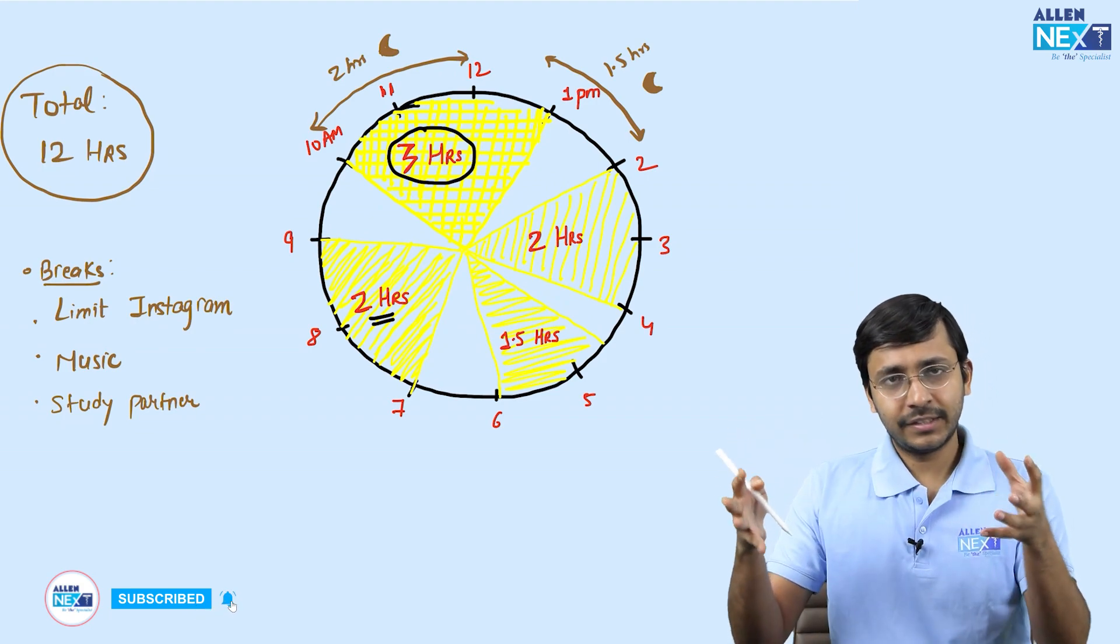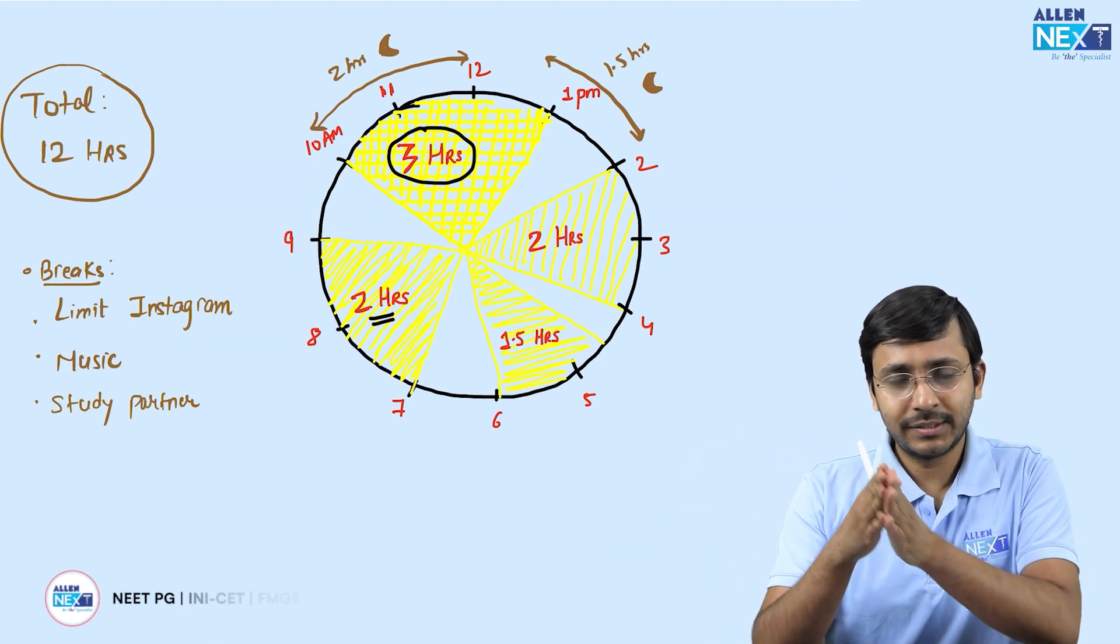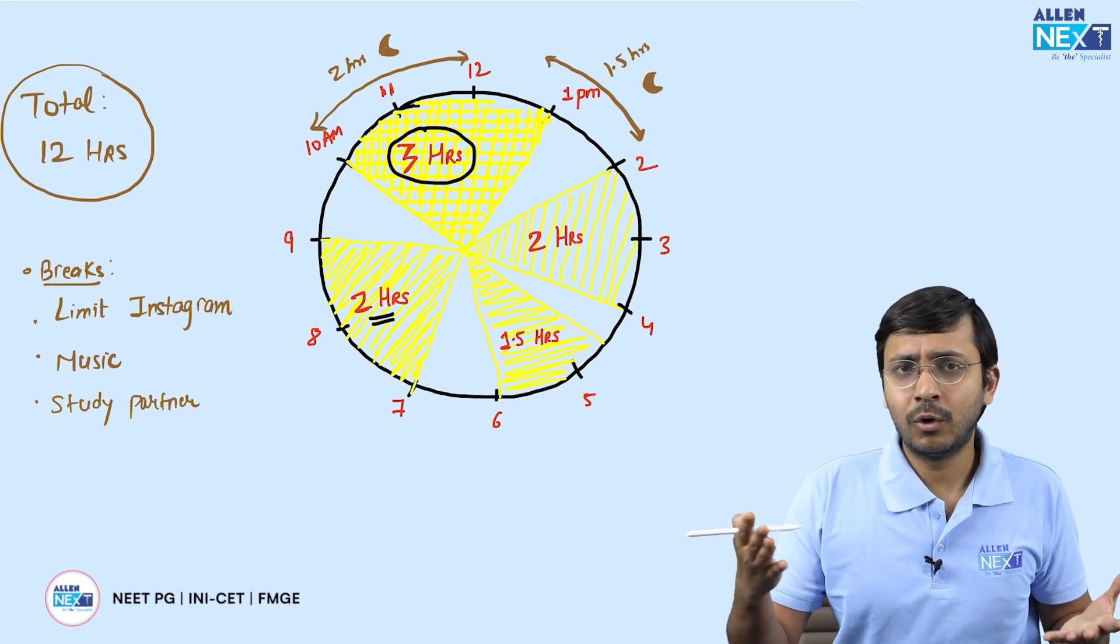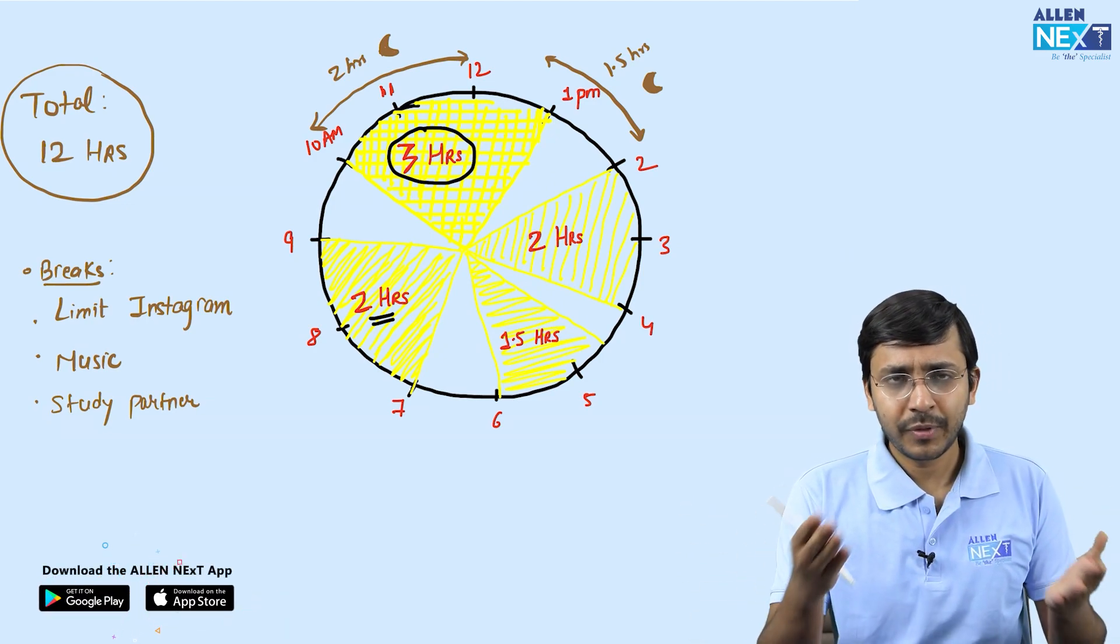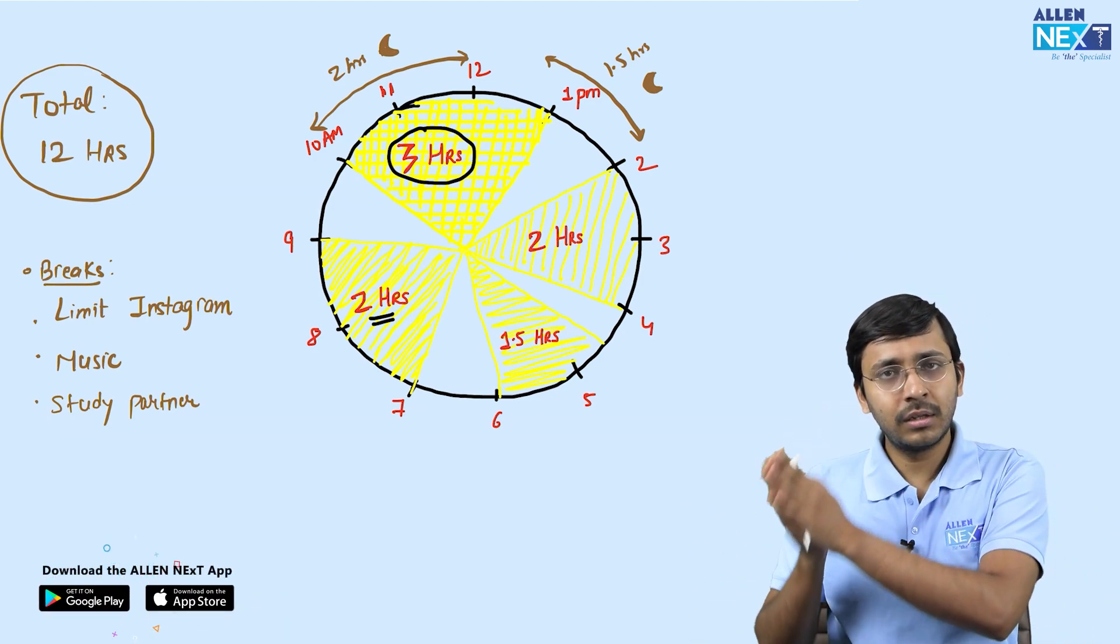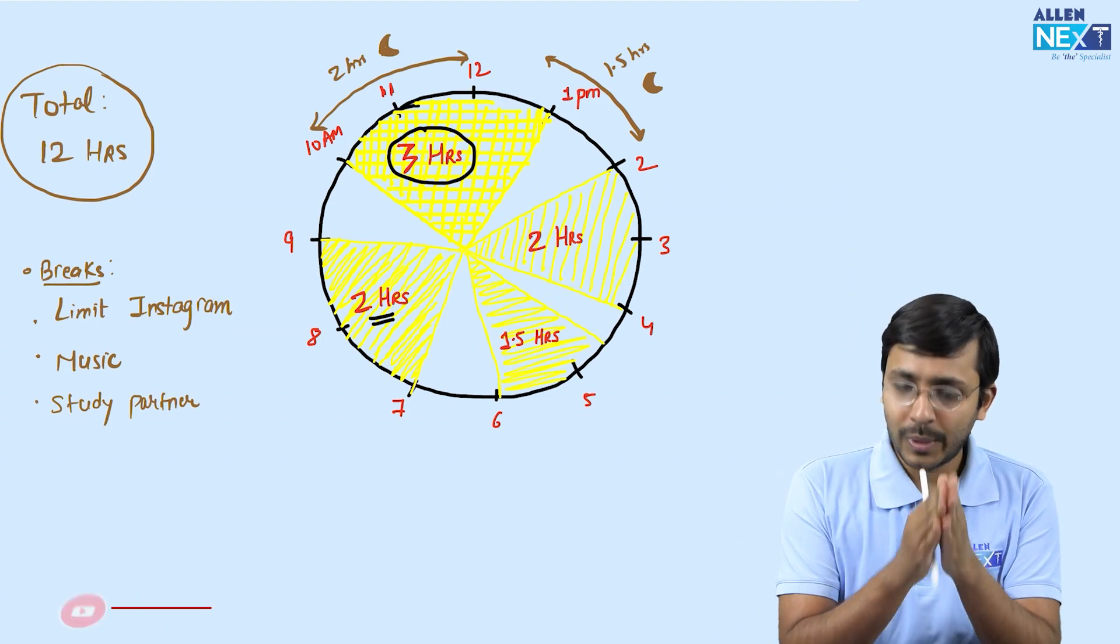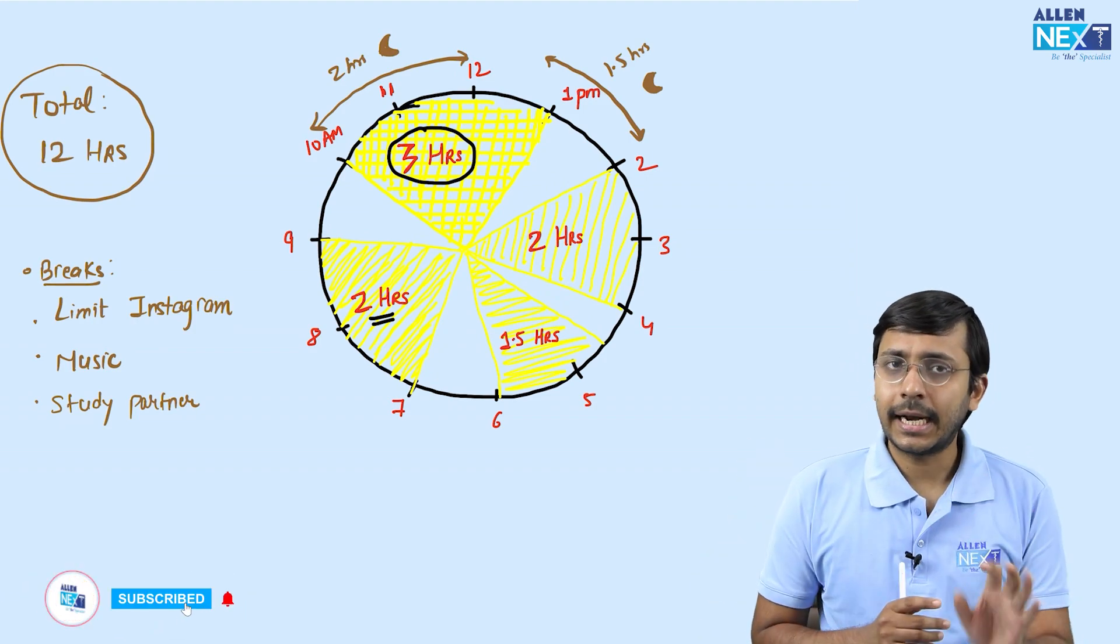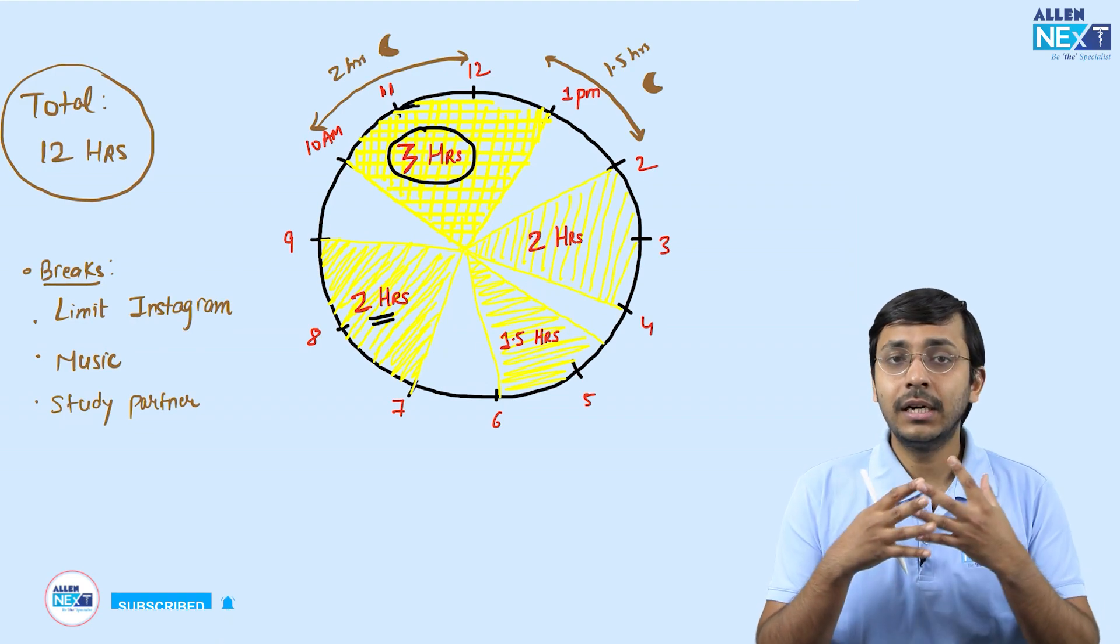After 12 it's variable. Some students sleep at 12 to 1 and wake up early at 7 or 8, whatever suits you. If you're a night owl, you can put in another one and a half hour of study session from 12:30 to 2 and try to sleep at least till 2:30.